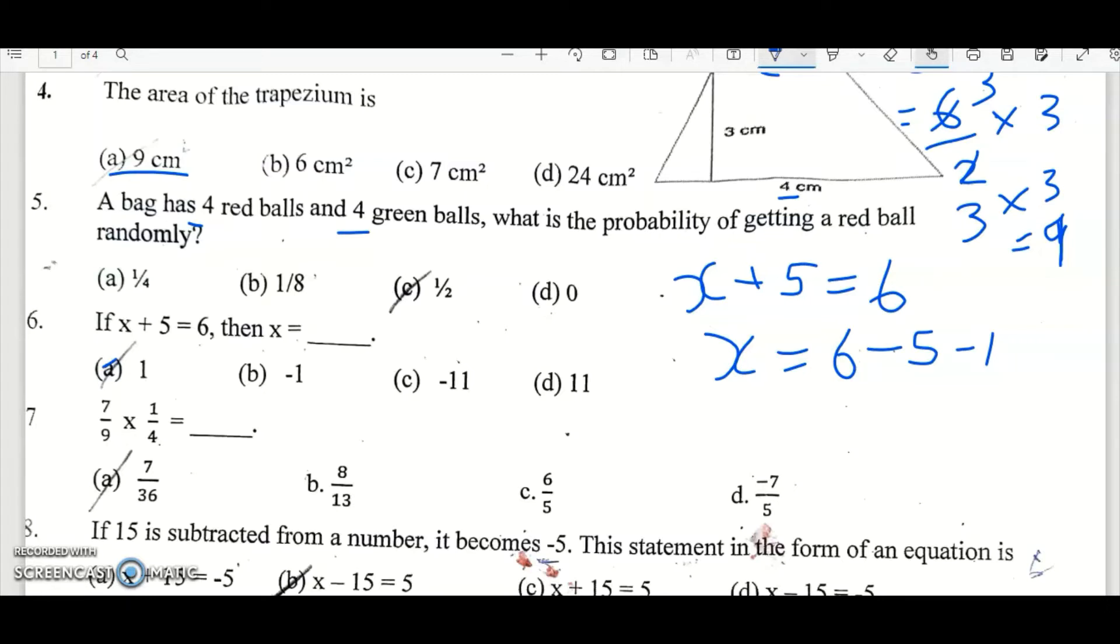Question number 7. 7 by 9 into 1 by 4 equal to how much? That is, it is very obvious, 9 into 3 is 36, 7 by 36.